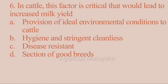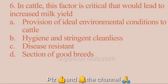Sixth question: in cattle, which factor is critical that would lead to increased milk yield? Option A: provision of ideal environmental conditions to the cattle. Option B: hygiene and maintained cleanliness. Option C: disease resistance. Option D: selection of good breed. Correct answer: Option D — selection of good breed.